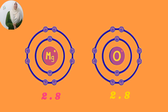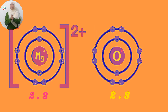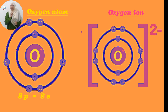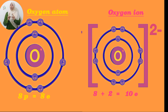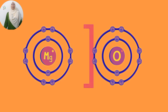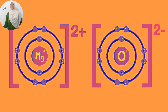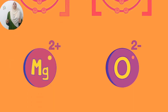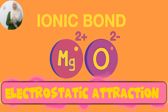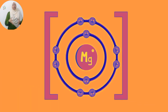Now where is oxygen gaining the 2 electrons from? From magnesium. The oxygen atom gains 2 electrons to form an ion. The number of electrons rises from 8 to 10, while the number of protons stays at 8. So 8 protons minus 10 electrons gives a total charge of negative 2. We have the magnesium ion with a charge of plus 2 and the oxygen ion with a charge of negative 2. Opposites attract — we have an ionic bond.